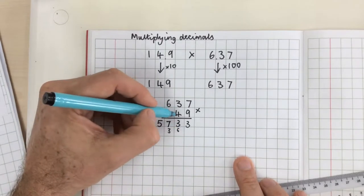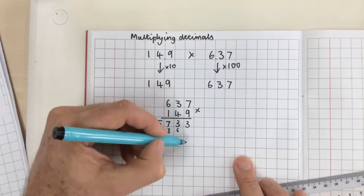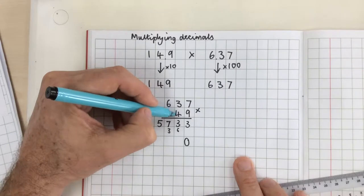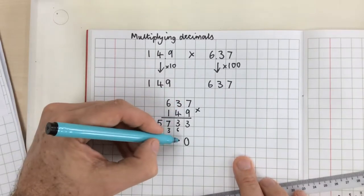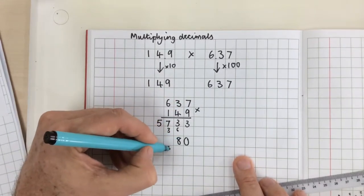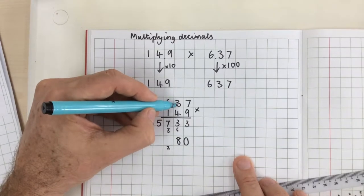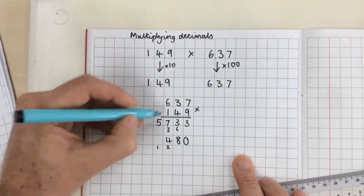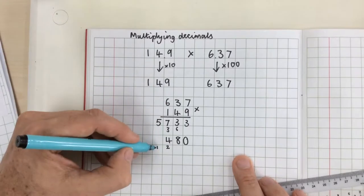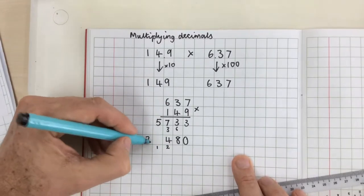Next we're multiplying by the 40 so I'm going to place a 0 as a place marker. 4 times 7 is 28. 4 times 3 is 12, plus the 2 is 14. 4 times 6 is 24, plus the 1 is 25.